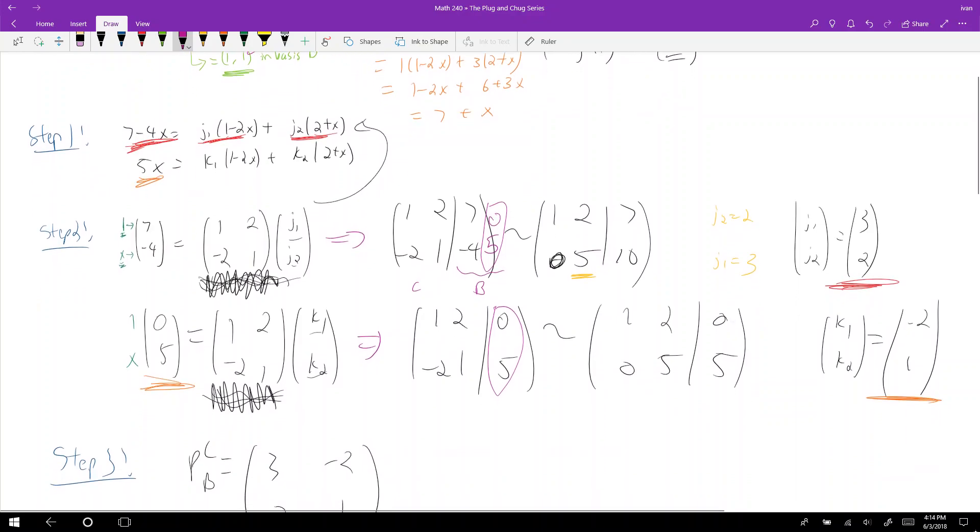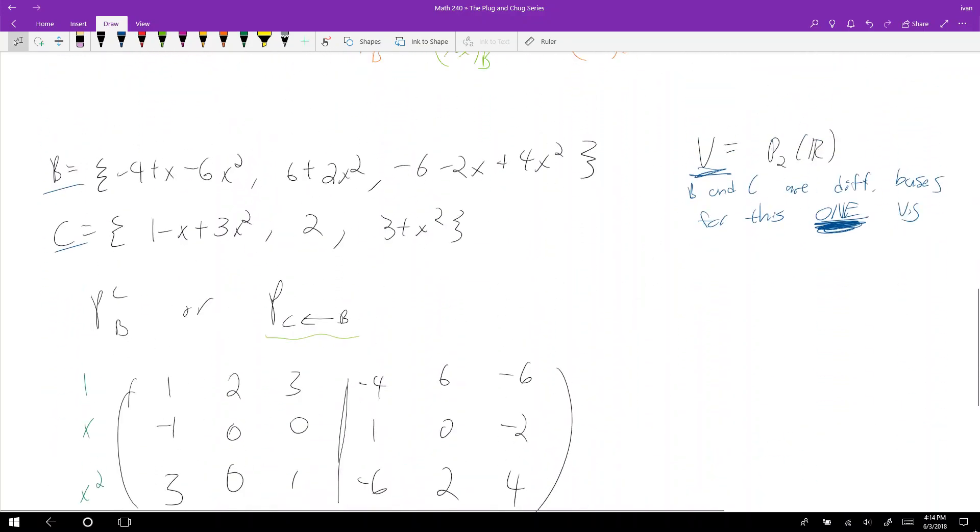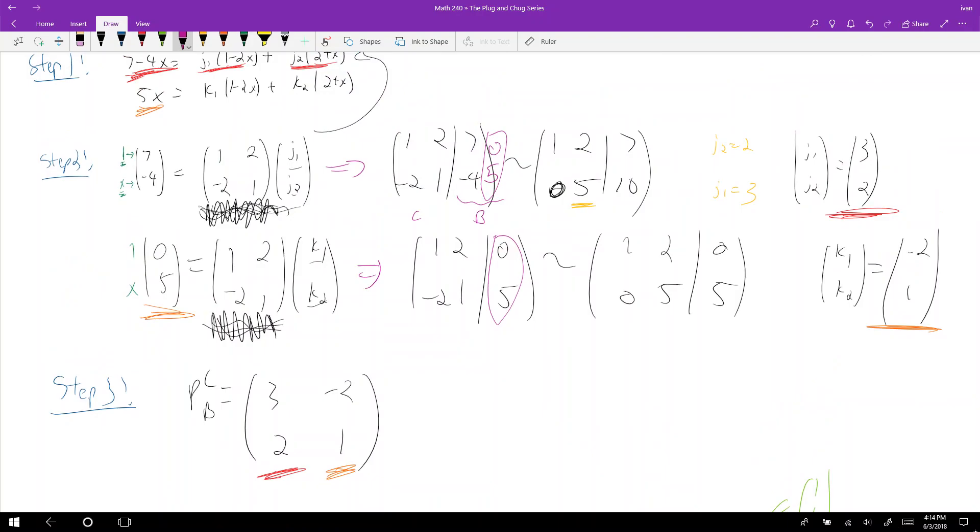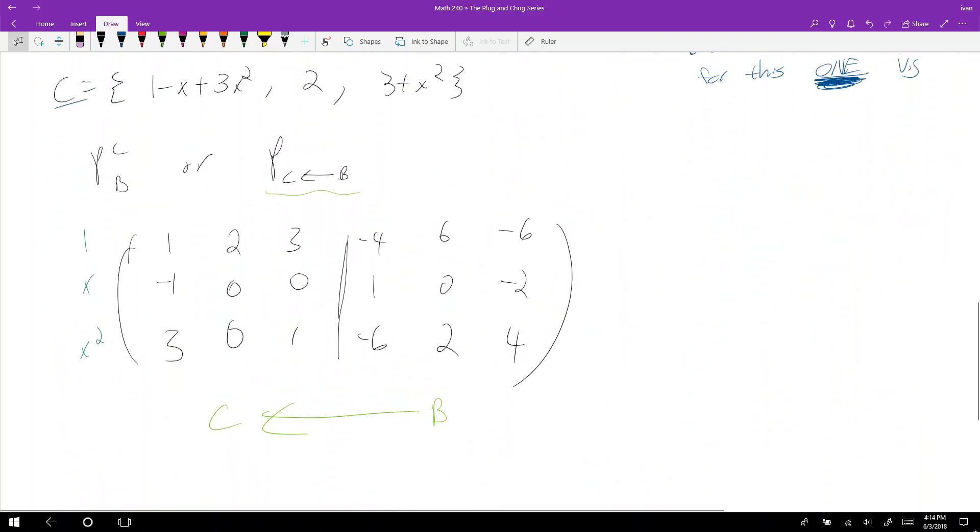That's what I did down here, right? I just essentially took this guy and I smooshed him up here. Why can I do that? Well, it's because this guy up front is the same. Cool. Now what's the goal? The goal is I actually want to reduce this guy on the left-hand side. I want to reduce...